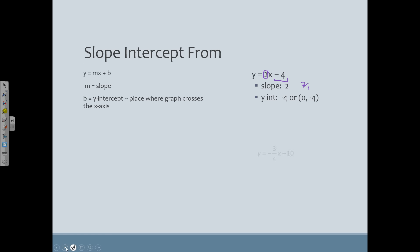Let's look at another example. y equals negative 3 fourths x plus 10. Slope is the coefficient in front of the x. There's my slope. My y-intercept is the constant, or the number without a variable. So in this case, my slope is negative 3 fourths. My y-intercept sometimes we say is 10 or we say it's the point (0, 10).